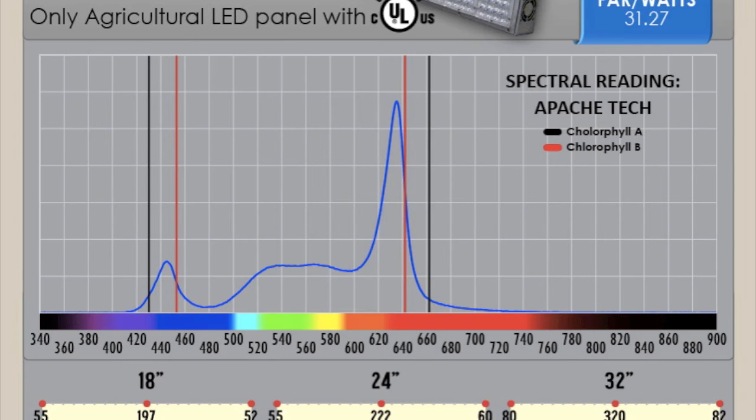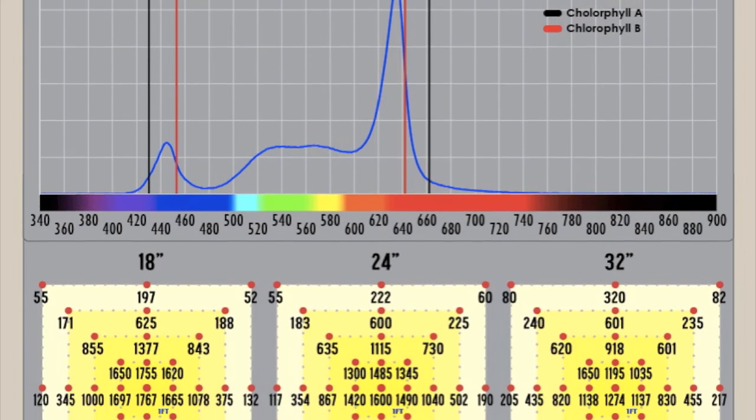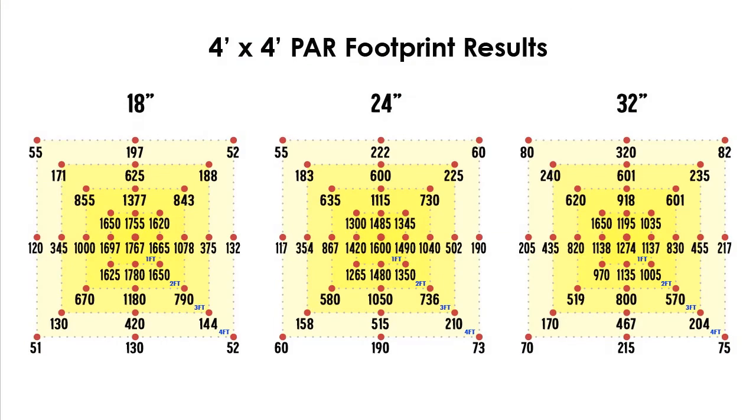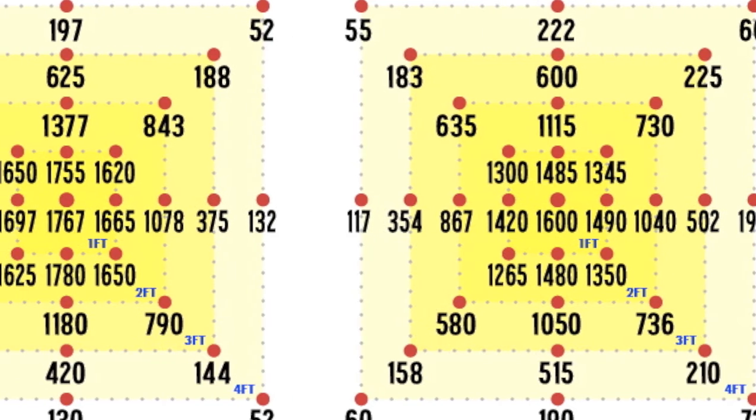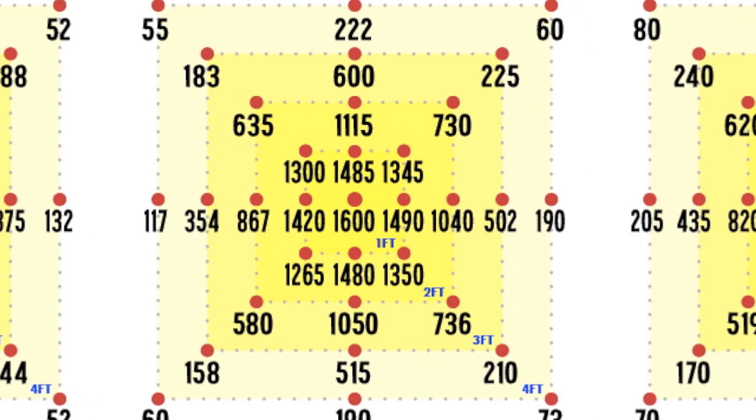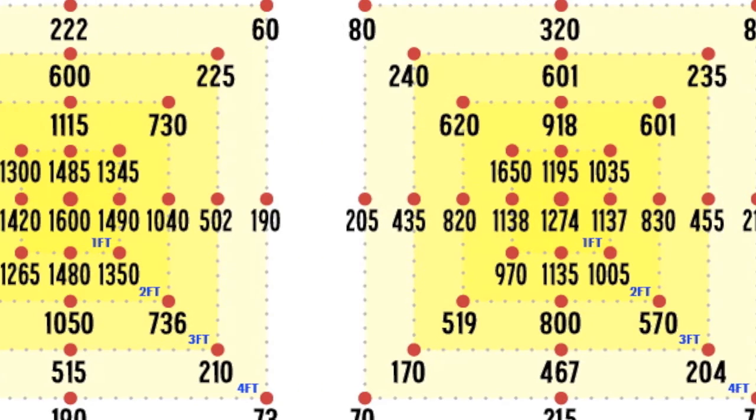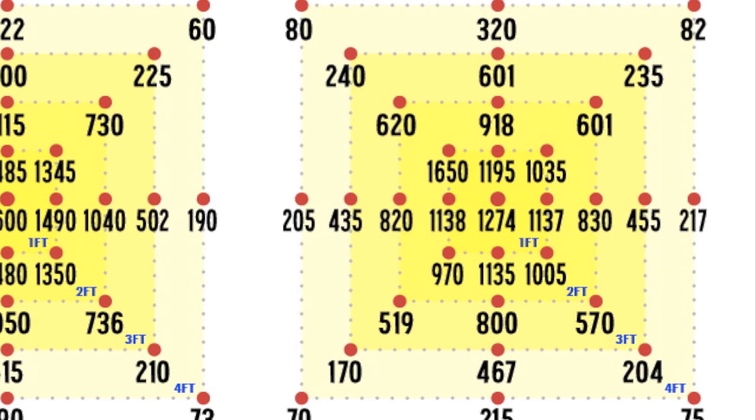This light is really a flowering dominant light although it does have those other spectra so that you can use this light from seed to harvest. Let's move down to our 4x4 footprint analysis where we measured this light at 18 inches above the footprint, 24 inches above the footprint and 30 inches above the footprint. You can see the 33 points we measured and this should hopefully help you gauge how high you want this light above the canopy for a good distribution versus intensity.